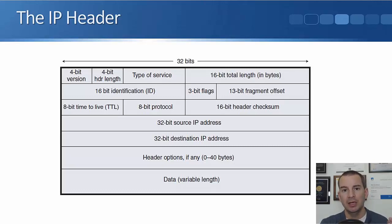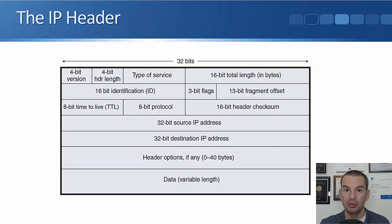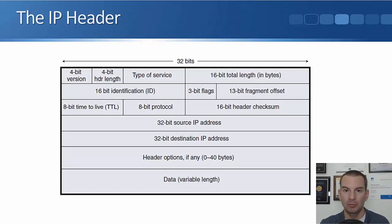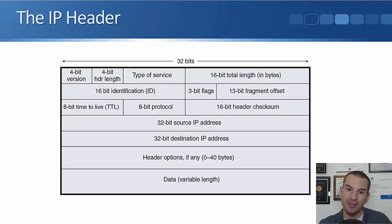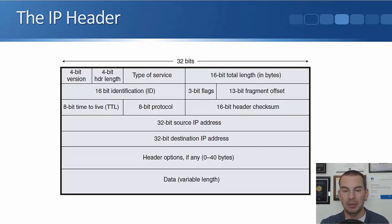The next row is used for fragment information. Different media types — for example, Ethernet — have a maximum transmission unit size, the maximum size of a packet. The default Ethernet MTU is 1500 bytes. If a packet larger than that needs to be sent, it has to be split into smaller parts called fragments. The second row of the IP header helps keep track of those fragments.